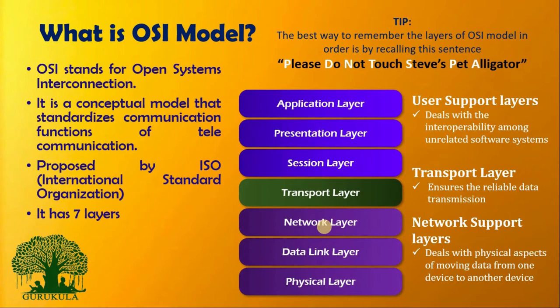The first three layers from the top — Application, Presentation, and Session — are together called User Support Layers, because they deal with interoperability among unrelated software systems. The Transport Layer is directly called the Transport Layer, and it ensures the reliability of data transmission. Sometimes the Transport Layer is referred to as the heart of the OSI model.